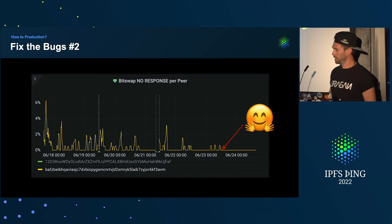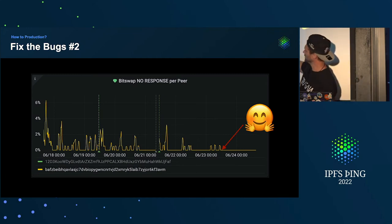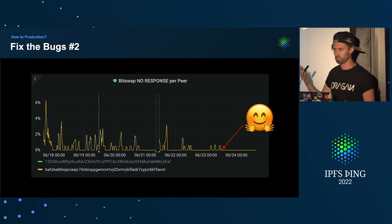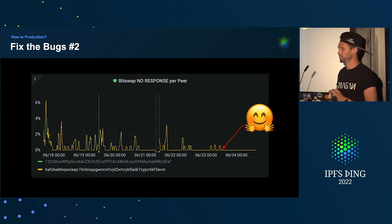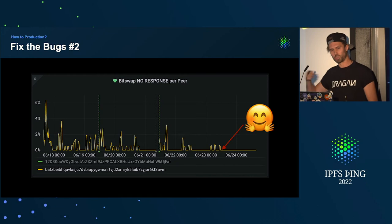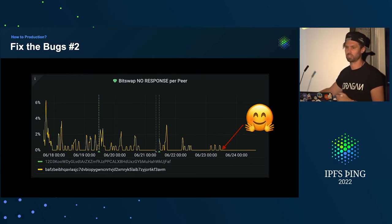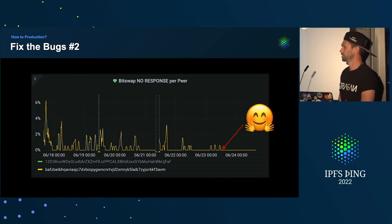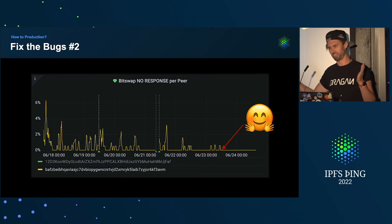Network availability — done. Then we realized there were still connection errors causing little bumps in our bitswap no-response metric: things were trying to connect and not responding. We found the reason was a native dependency called sodium-native, used by noise for connection encryption. Under load, that native dependency was somehow triggering a race condition in Node 16 and pulling the whole process down, causing the Kubernetes container to restart — not good when you need a long-lived bitswap connection.